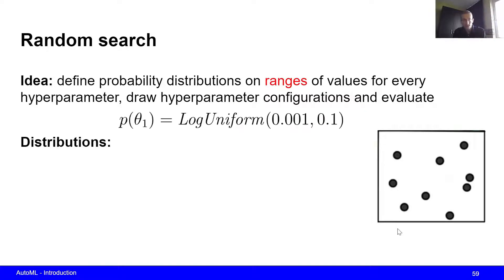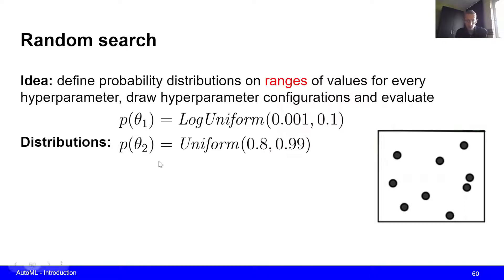For example, for the first hyperparameter we could search over the range from 0.001 to 0.1 using a log uniform distribution. This means we transform both values into log space, sample in log space, and transform the sampled values back to the original space. For the second hyperparameter, we could define a uniform distribution over an interval with a minimum value of 0.8 and a maximum value of 0.99, and sample uniformly from that range.